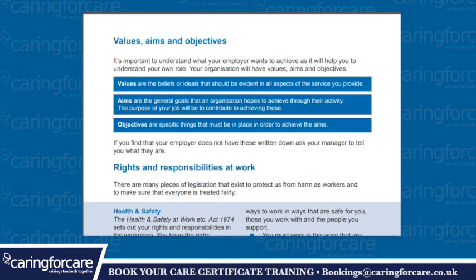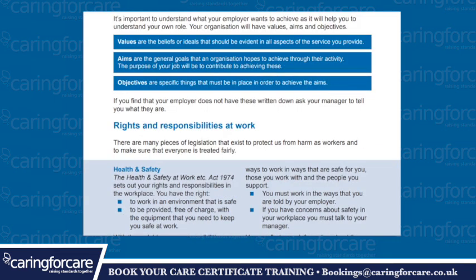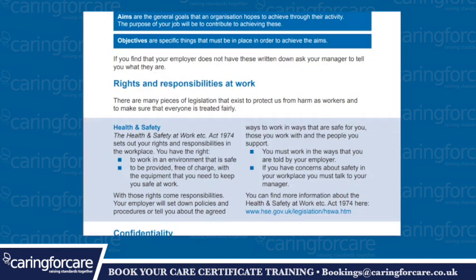It is important to understand what your employer wants to achieve as it will help you to understand your own role. Your organisation will have values, aims and objectives, usually found on the website or in printed form. Values are the beliefs or ideals that should be evident in all aspects of the service you provide. Aims are the general goals that the organisation hopes to achieve through their activity, and the purpose of your job will contribute to achieving these. Objectives are specific things that must be in place in order to achieve the aims. If your employer does not have these written down, ask your manager to tell you what they are.